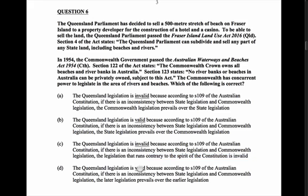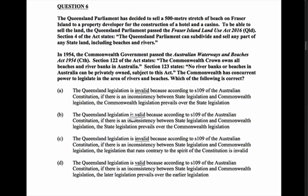D — the Queensland legislation is valid because according to section 109 the latter legislation prevails over earlier legislation — that's not true at all. So our best answer is A: the Queensland legislation is invalid because according to section 109 of the Constitution, if there's an inconsistency between state and Commonwealth legislation, the Commonwealth legislation prevails over state legislation. But remember, that only works for concurrent and exclusive powers — if it's a residual power, the state legislation is the one that is valid.